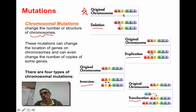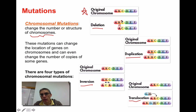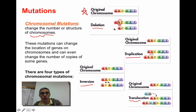Starting with our original chromosome, the normal sequence is simply A, B, C, D, E, F. If we have a deletion, we take out the B and end up with A, C, D, E, F. We're deleting a part of that chromosome — potentially a really important piece of what that particular chromosome codes for — and obviously that's going to cause problems.